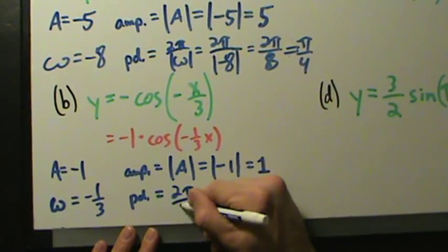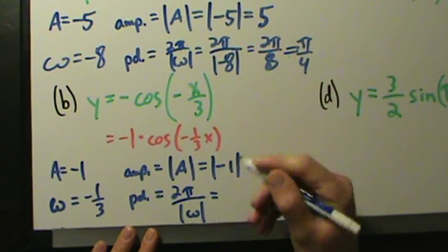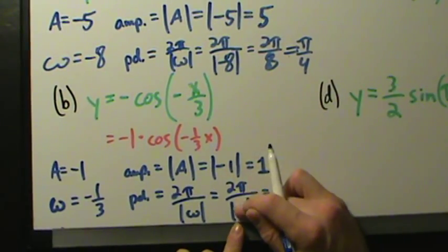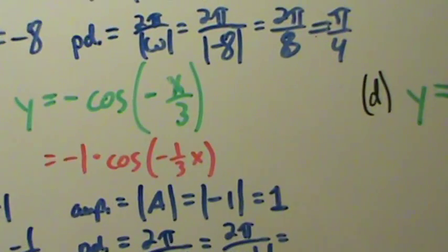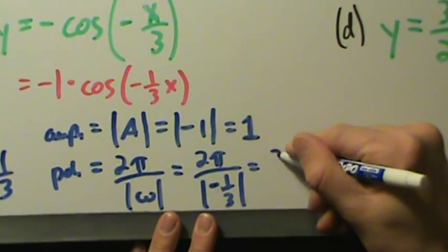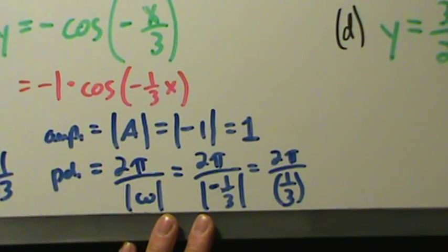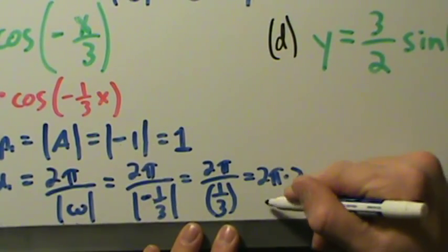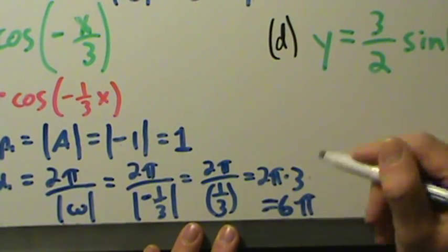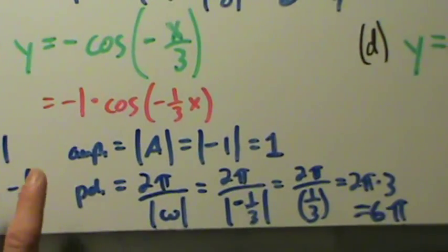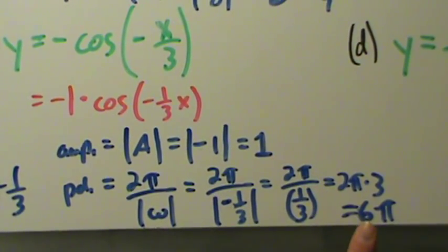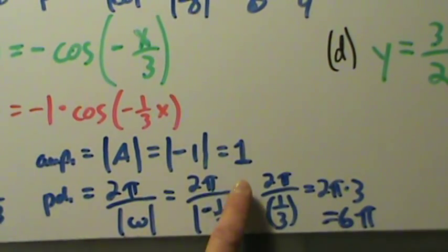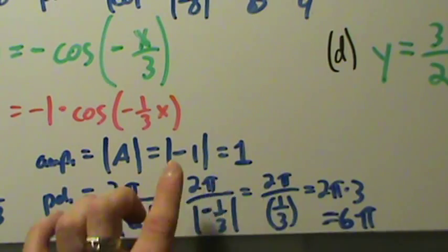So the period is 2π over the absolute value of negative one-third. The absolute value of negative one-third is positive one-third, so this is 2π divided by one-third. Dividing by one-third is the same as multiplying by 3, so the period is 2π times 3, which equals 6π. The amplitude is 1, and the period is 6π — quite a bit larger than a normal period of 2π, meaning every 6π units this graph starts repeating.